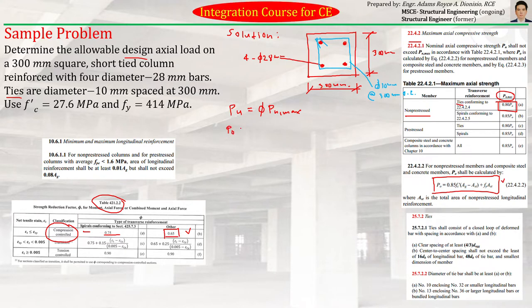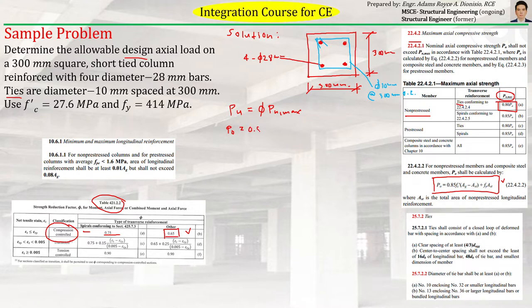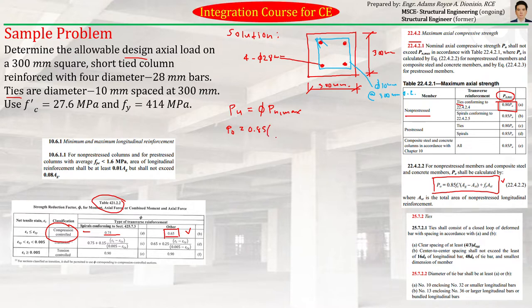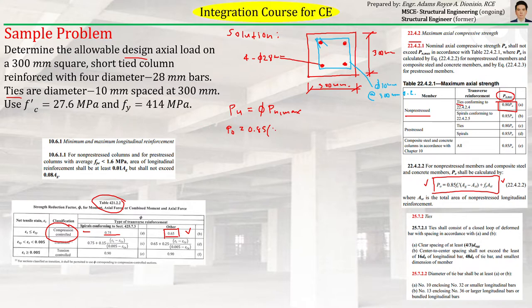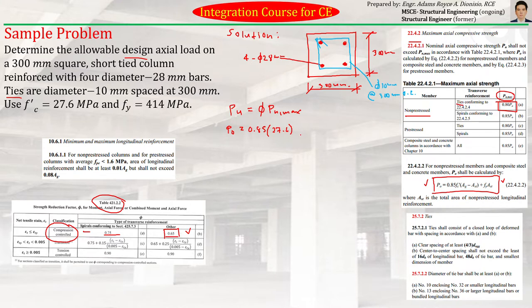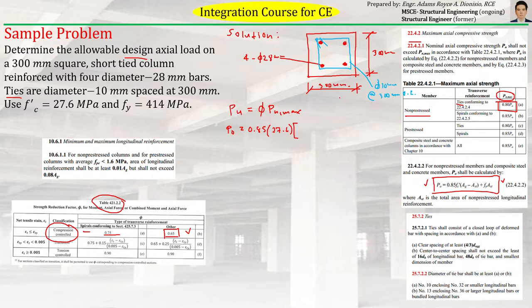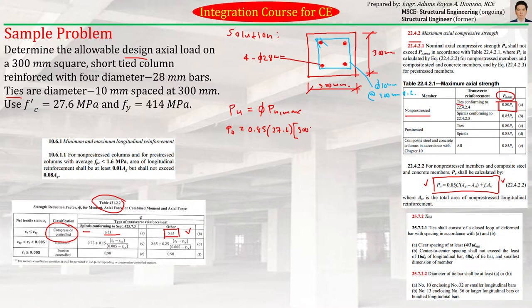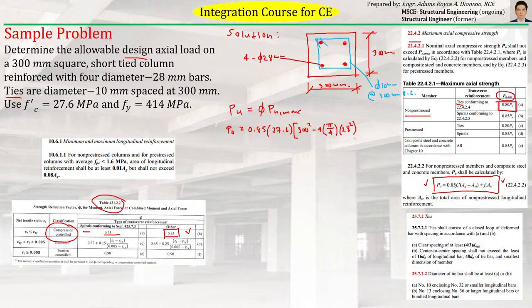So our PO will be 0.85 times FC prime. I'll write it directly here, since the formula is already here. Our FC prime is 27.6. And then times AG, which is the gross cross-sectional area, gross concrete area, the AG, which is just 300 squared, 300 times 300. Minus AST, the area of reinforcement. So it is 4 times pi over 4 times 28 squared.